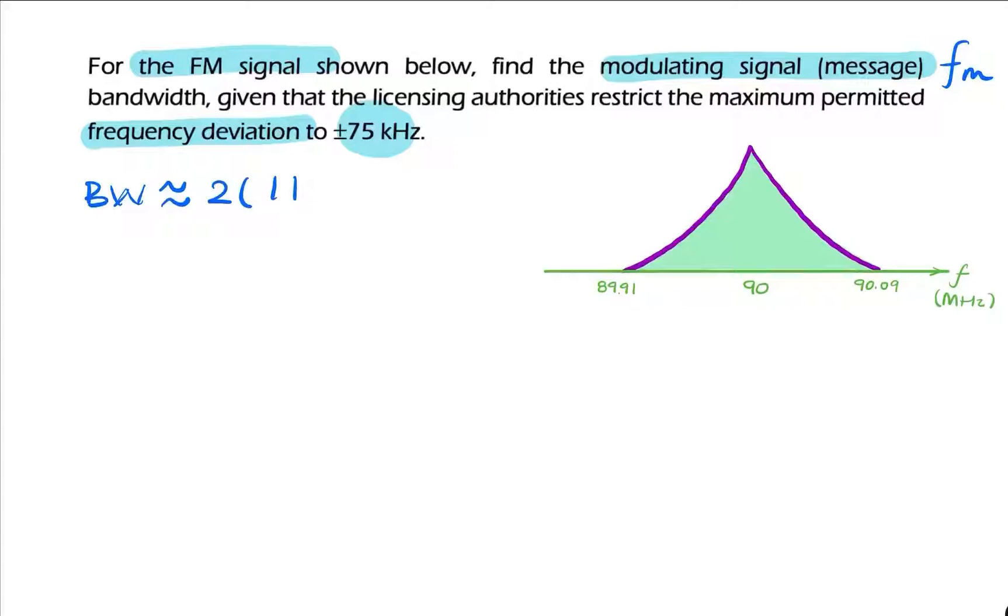So that's 2 into 1 plus beta times FM. Now, because we don't know beta, what we can do is rewrite that as 1 plus delta F over FM times FM. And that gives us a really useful expression: 2 into delta F plus FM.